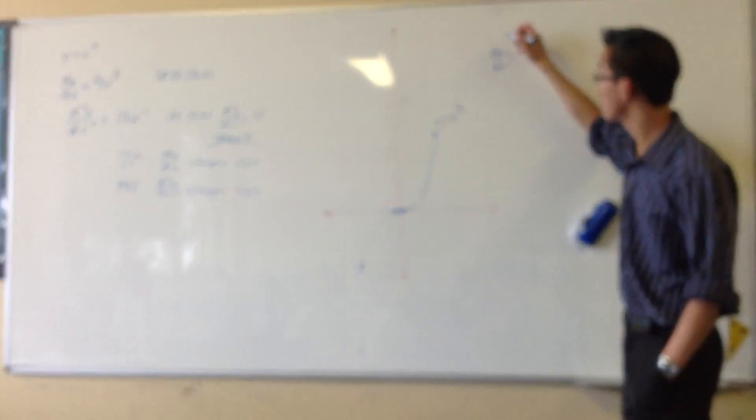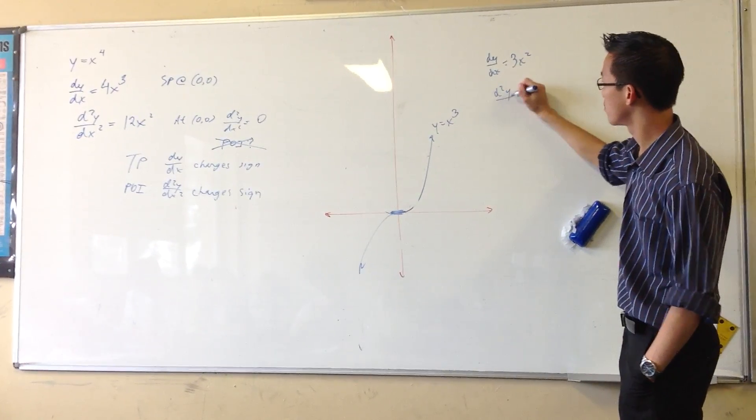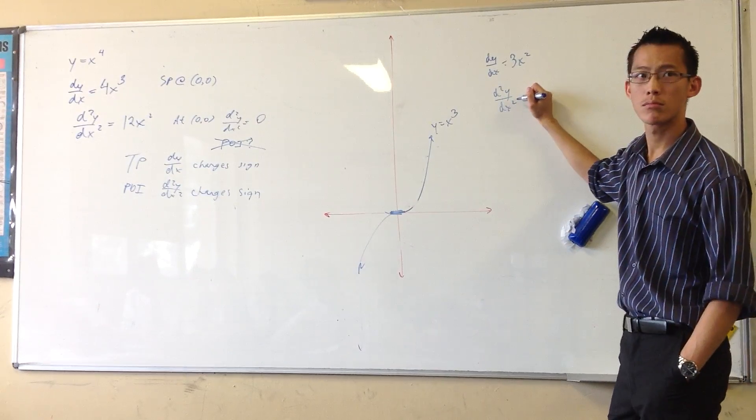3x squared, right? Second derivative. 6x, right?